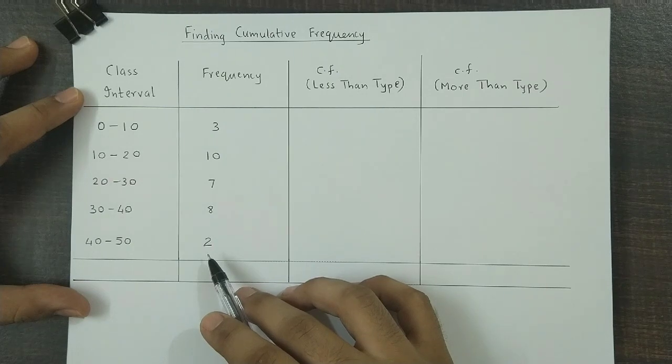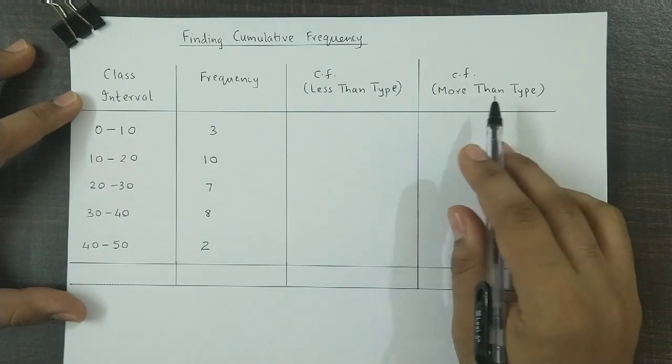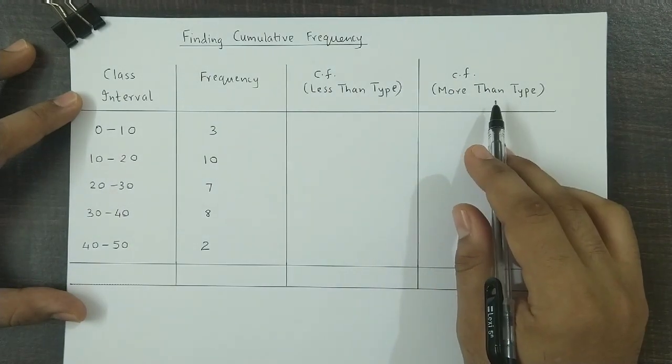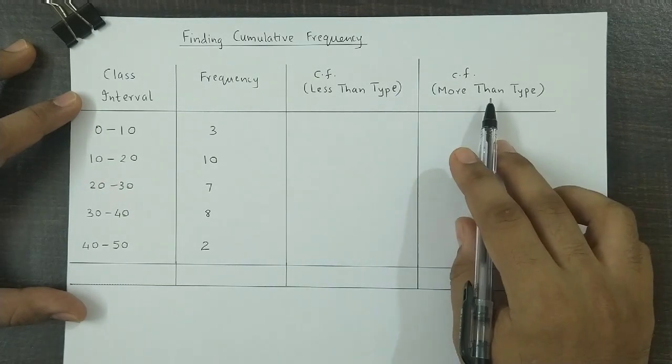Now cumulative frequencies are of two types. First type is less than type and the second one is more than type. And we will study how to obtain both these types, less than and more than.